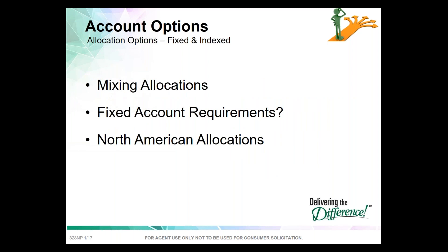We're going to talk about allocations, fixed account requirements, and what North American does. You can mix and match between the fixed account and the indexed account. A client might say they don't want all funds in index selections — you could put 50% in the fixed account and 50% in the indexed account. You can allocate at whatever percentage the client would like in 1% increments.